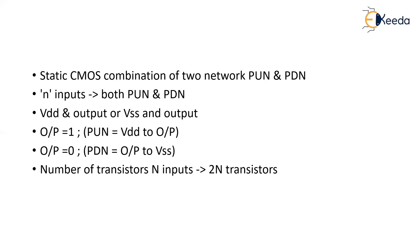How many transistors are required for a static CMOS? If I have N number of inputs, I will be using 2N transistors — N transistors for the pull-up network and N transistors for the pull-down network. For a single input, one P MOSFET on the top and one N MOSFET on the bottom. So the total number of transistors used in a static CMOS style is 2N transistors.